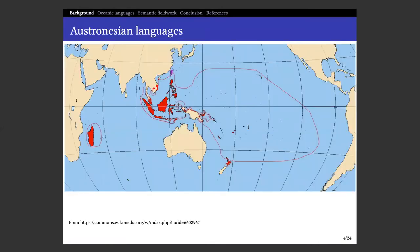We're talking about this area of the world — basically a family called the Austronesian family of languages. One of the ways linguistics started as a discipline was to look at how languages are related genetically. We can trace back history and find similarities among languages to identify relations, families, and affiliations. One of the biggest families in terms of geographical spread is the Austronesian family.